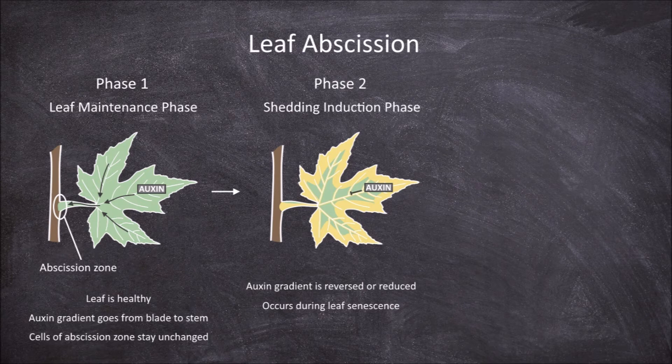The reversal or reduction in the auxin gradient causes the cells in the abscission zone to now be sensitive to the effects of the plant hormone ethylene, which promotes leaf abscission.